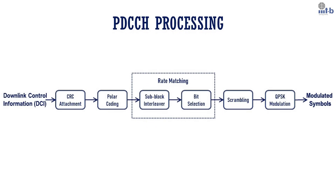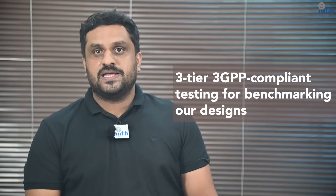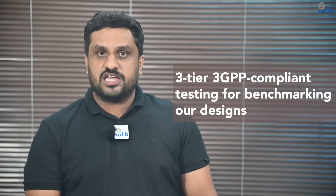The physical downlink control channel carries downlink control information, which gives scheduling information to the users when decoded. We develop 3GPP-compliant algorithms for each of the signal processing blocks in the PDCCH chain, and optimize these algorithms to meet 5G NR frame boundaries with minimum power consumption and resource utilization.